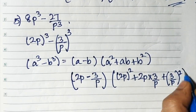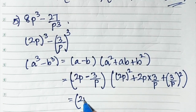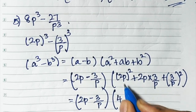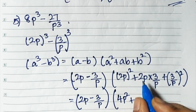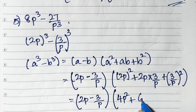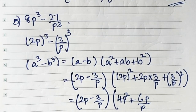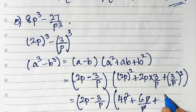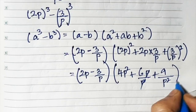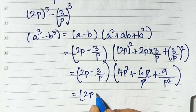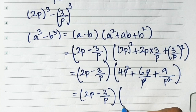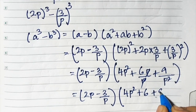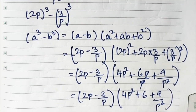Simplifying: square of 2p is 4p square, plus 2 times 3 is 6p upon p — we can cancel this p and this p to get 6, plus square of 3 is 9, square of p is p square so we get 9 upon p square. Final answer: (2p - 3/p)(4p² + 6 + 9/p²).